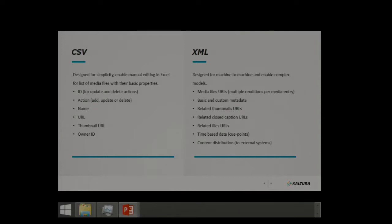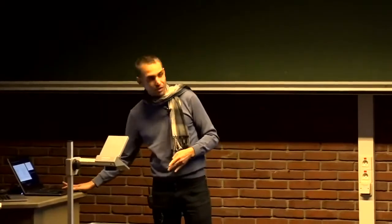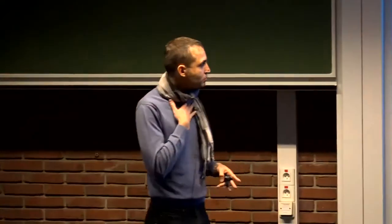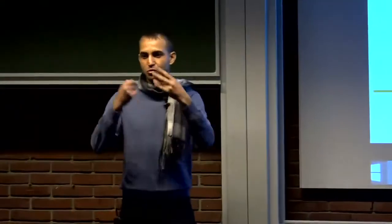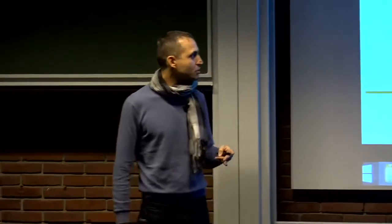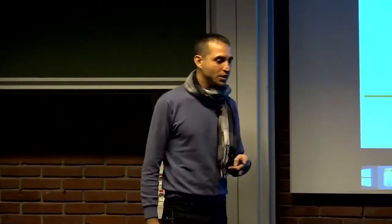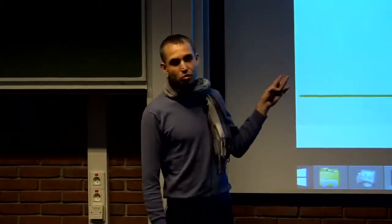CSV, as I said, is designed for human writing. It's supporting very simple properties. One main media file and a few more properties like name, description, tags, very basic properties. However, the XML could contain many different related objects. All of them could be in a single XML item. We enable the drop folder to drop the files manually by humans, which is very simple for users just to drop the file, and media entry will be created on our system. But it wasn't enough. Customers wanted to add tags, or category, or user ID, many different information.